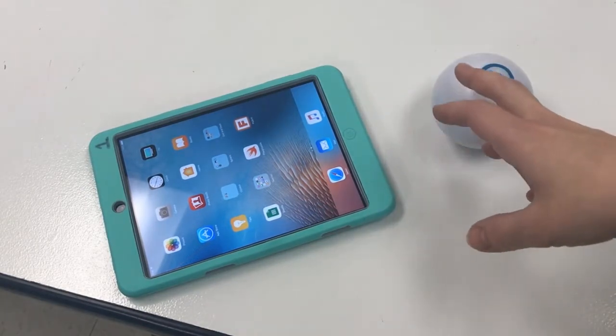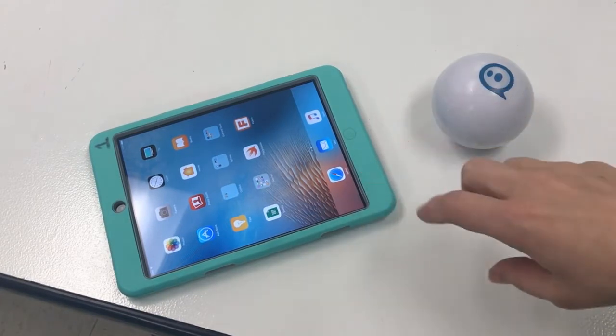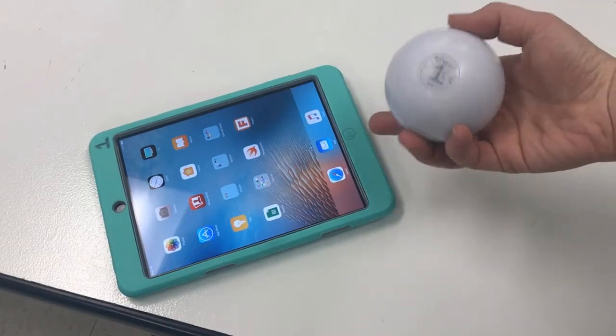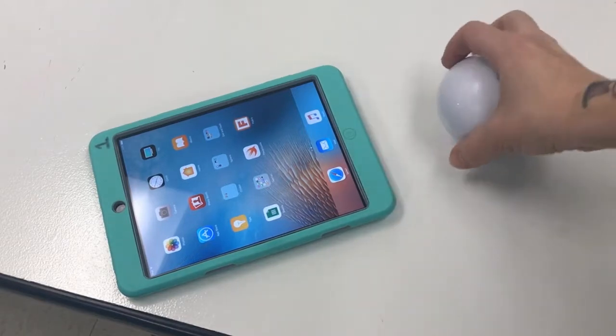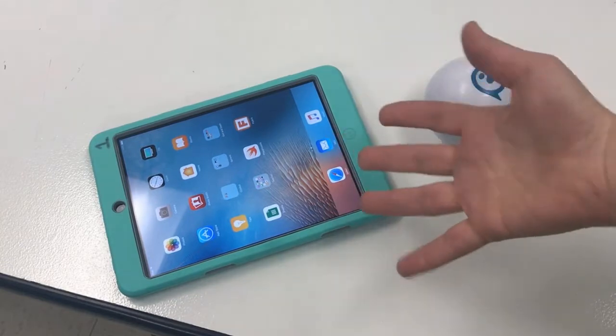Number one is Sphero pairs via Bluetooth with one device at a time. So the way I have them organized in the classroom is that Sphero number one matches with iPad number one, so you have to make sure that you have a matching set otherwise it won't work.